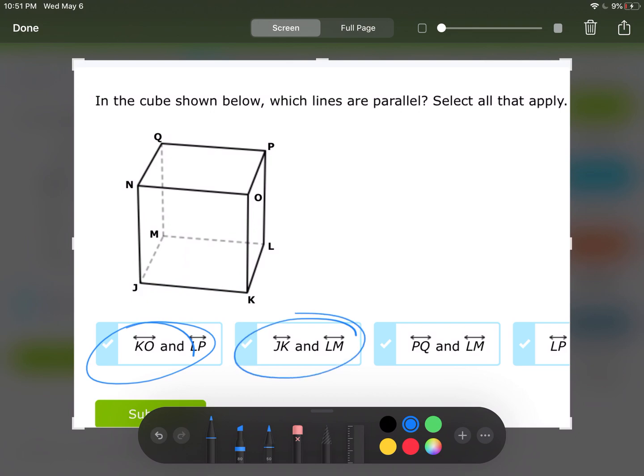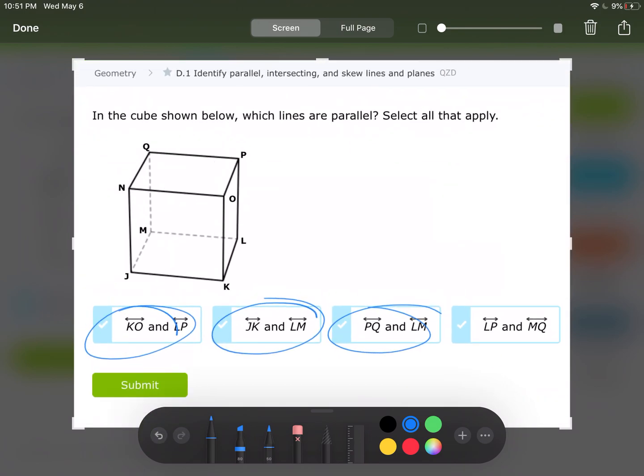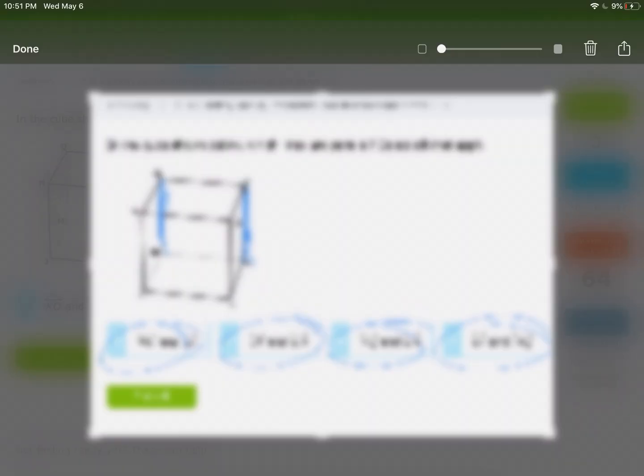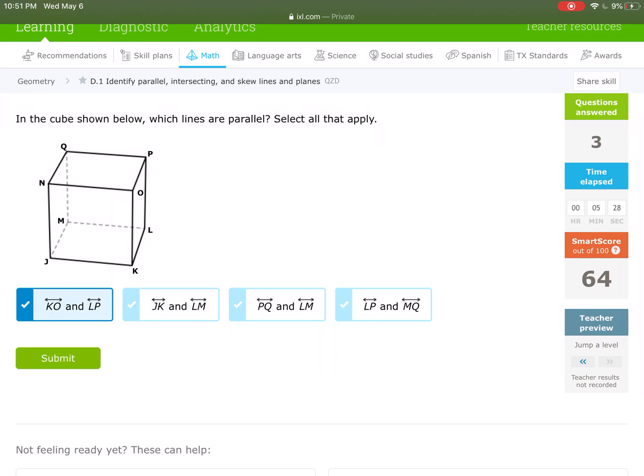LP-MQ. Same plane, never going to touch. All four were examples of parallel lines. LP-MQ, one, two, three, four. Select.